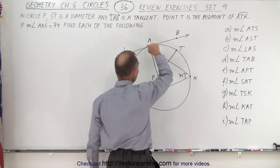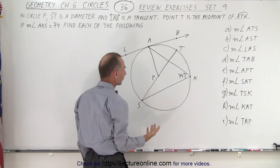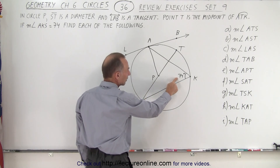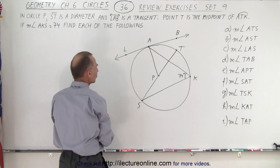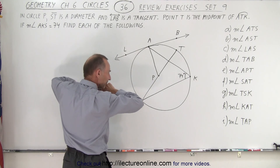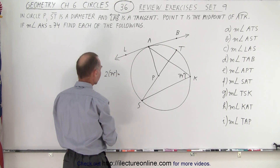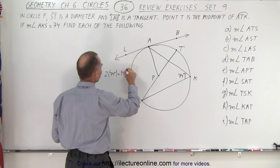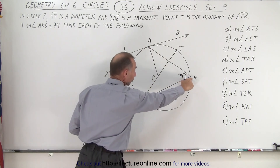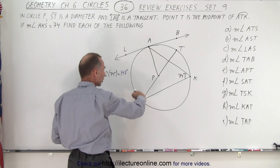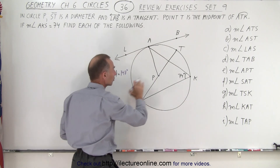First: arc ATS, from A to T to S. Since we know this angle is 74 degrees, and the measure of an inscribed angle must be half the measure of its intercepted arc, the arc must be 2 times 74 degrees, which equals 148 degrees. The point is on the edge of the circle, not the center, so the arc measure is twice the inscribed angle.